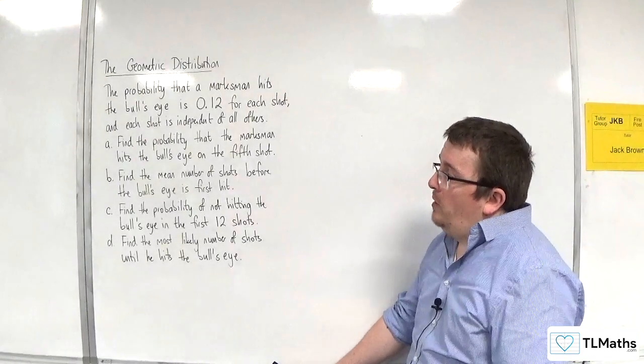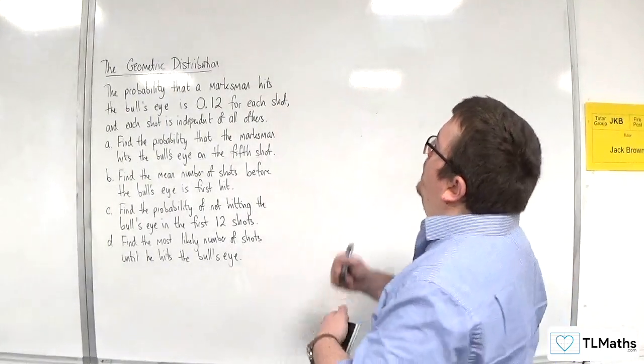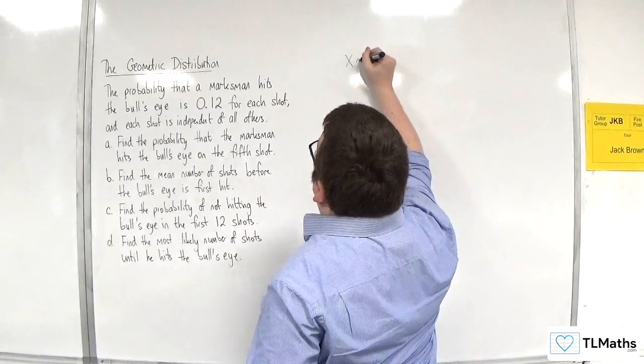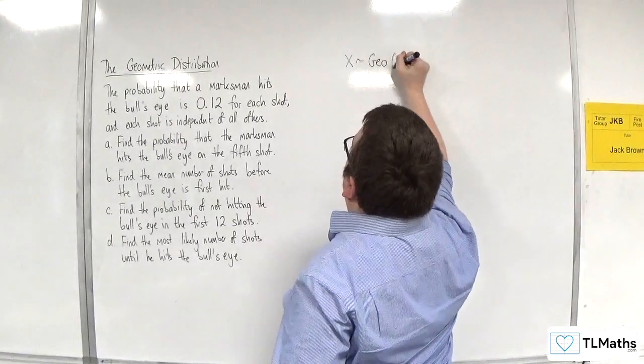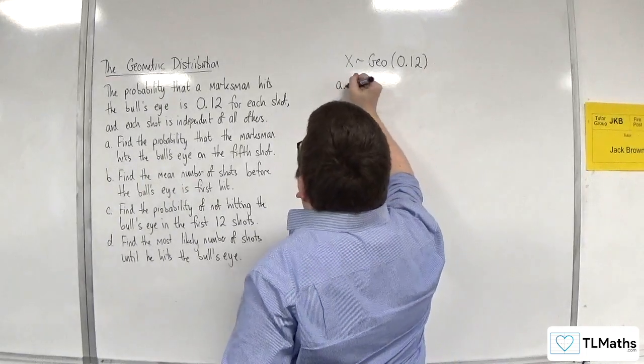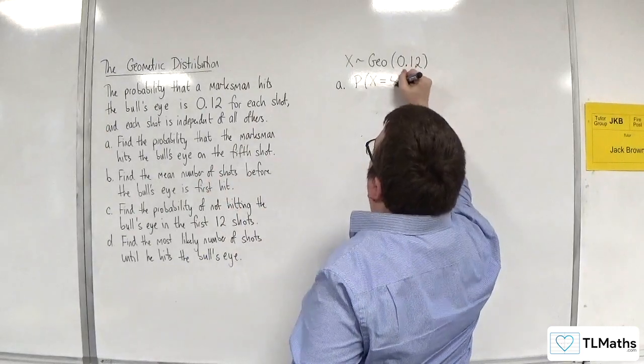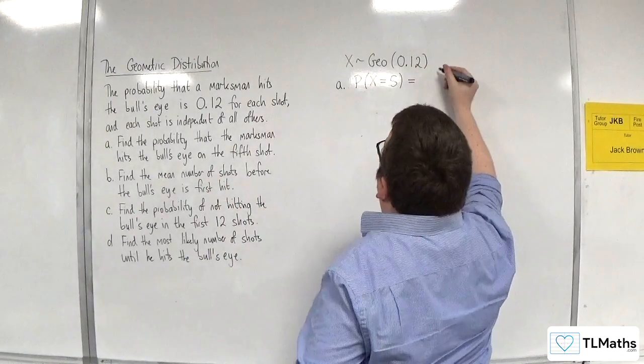Part A: find the probability that the marksman hits the bullseye on the fifth shot. Well, let's assume that we do have a geometric distribution with a probability of 0.12. So find the probability that the marksman hits the bullseye on the fifth shot, so X is equaling 5.